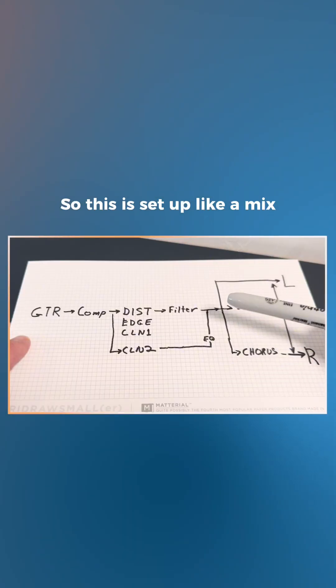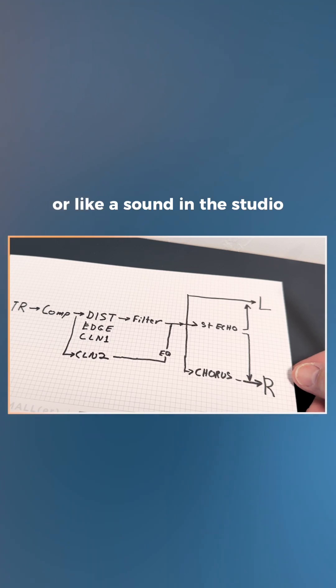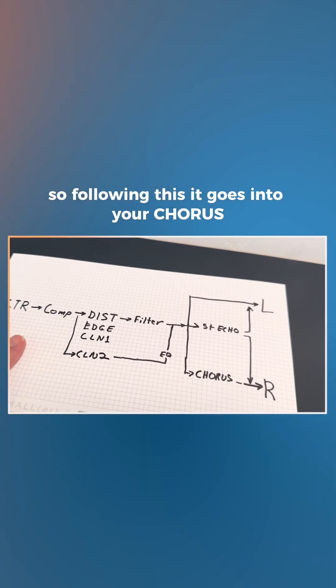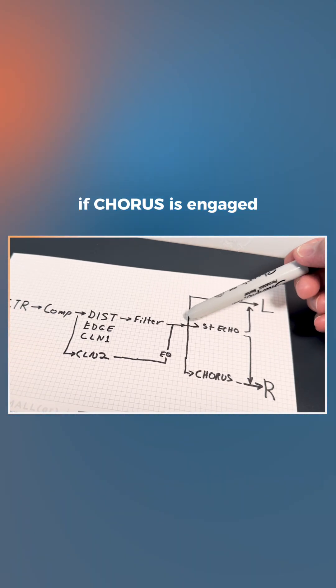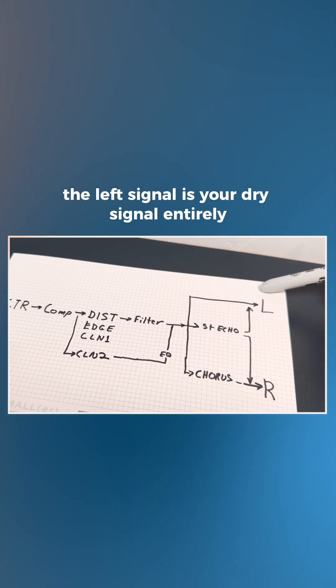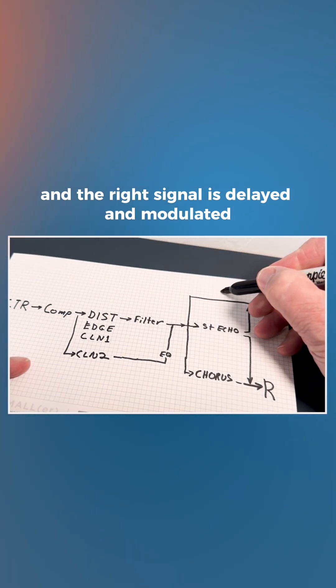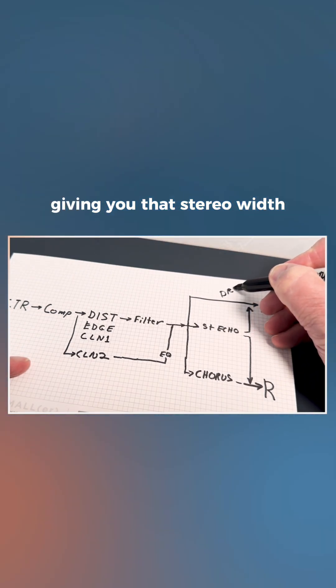So this is set up like a mix or like a sound in the studio. Following this, it goes into your chorus. If chorus is engaged, the left signal is your dry signal entirely, and the right signal is delayed and modulated, giving you that stereo width.